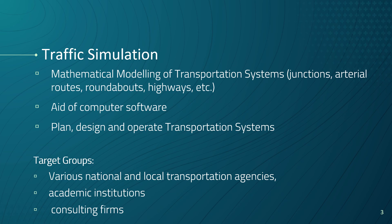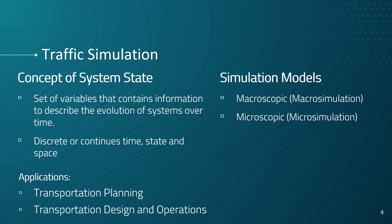Various national and local transportation agencies, academic institutions and some related consulting firms use simulation to aid in their management of transportation networks. To understand simulation, it is important to understand the concept of system state. The system state is a set of variables that contains enough information to describe the evolution of the system over time. Take the speed of a vehicle for example — the speed can fluctuate in different times and positions within the simulation. Traffic simulation models are classified according to being discrete or continuous in time, state, and space.